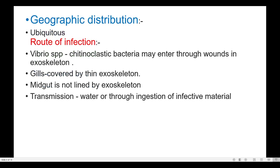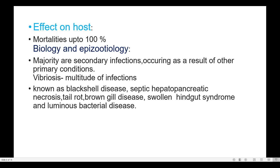Geographic Distribution: Ubiquitous. Route of Infection: Vibrio species — chitinoclastic bacteria may enter through wounds in the exoskeleton. Gills are covered by a thin exoskeleton. The midgut is not lined by exoskeleton. Transmission: via water or through incision of infective material.